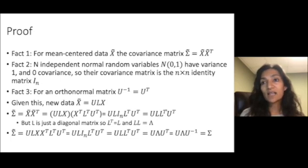But notice that since L is a diagonal matrix, it's equal to its transpose. And further, L times L equals this matrix lambda, which contains the eigenvectors. So if we substitute lambda for L times L transpose, we get U, lambda, U transpose.